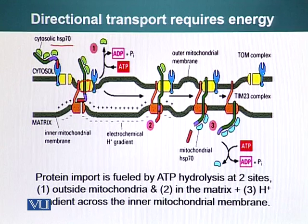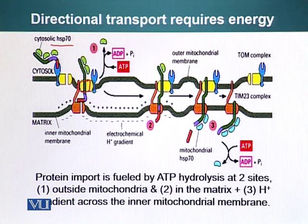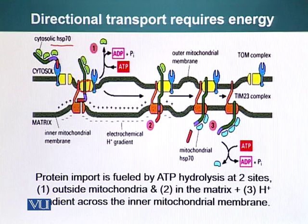The proton gradient is one way the mitochondria spends energy in importing the protein. Additionally, there are heat shock proteins inside the mitochondrial matrix that also help move the protein in. There are two mechanisms by which this can be accomplished.